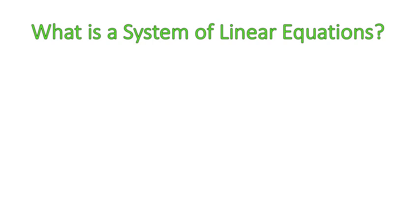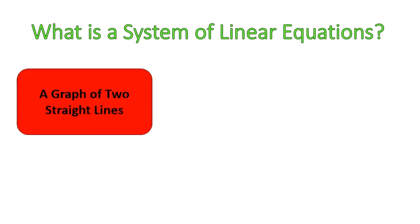First off, what is a system of linear equations? A system of linear equations is when you graph two straight lines. Linear equations are just lines, and a system of linear equations is when you have two or more of those lines graphed together.